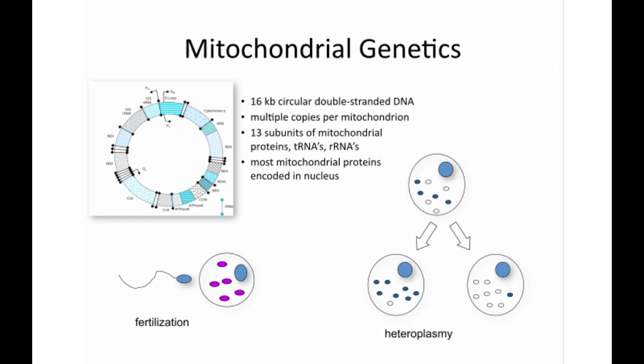Unlike the nuclear genome, where each gene is replicated and faithfully transmitted to each daughter cell, mitochondrial DNA segregates at random during mitosis or meiosis. This, in principle, can lead to big discrepancies in the proportion of mutant versus non-mutant mitochondria if there is a mixture in a given cell. This is referred to as heteroplasmy, and it can cause very significant differences in phenotype from one cell or tissue to another, or from one member of a family to another.